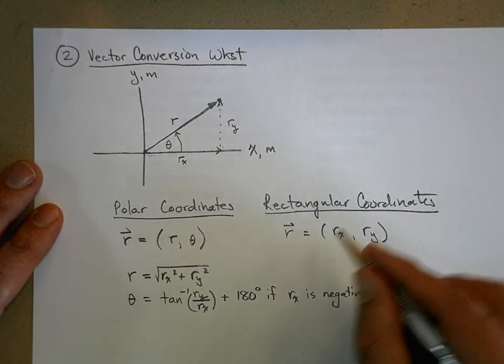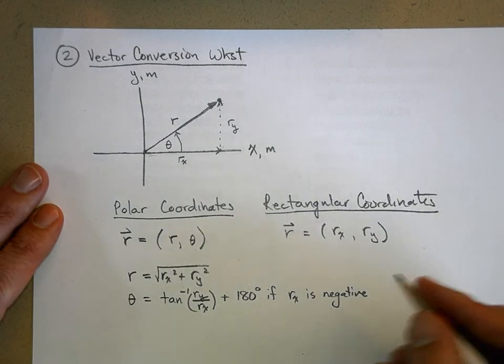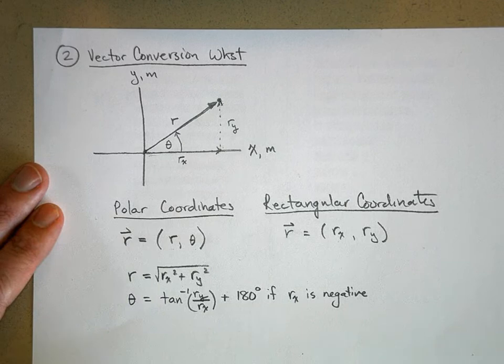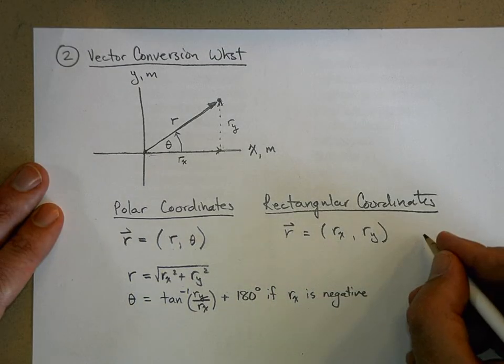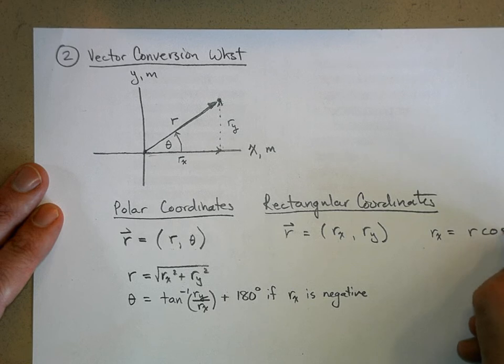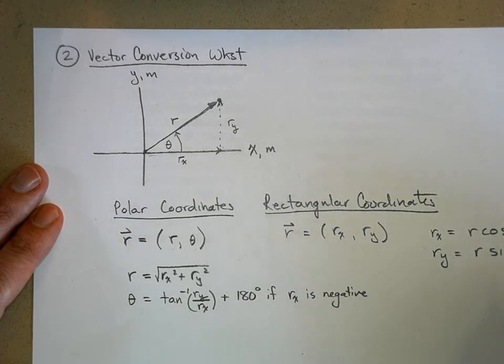Now, to use rectangular coordinates, it's pretty easy. If you're given r and theta, and you want to find r x, you just say r x is equal to r cosine theta, and r y is equal to r sine theta. And there's no tricks or anything to worry about here.